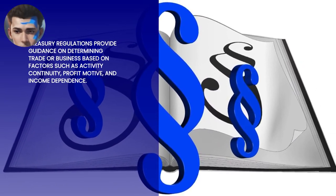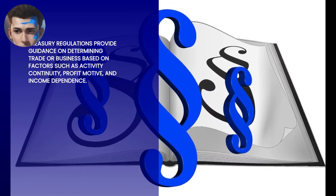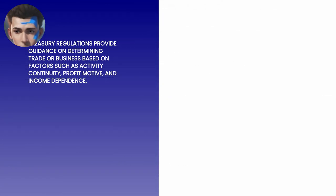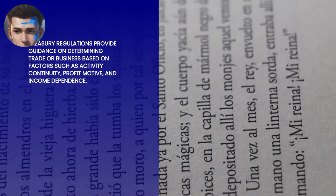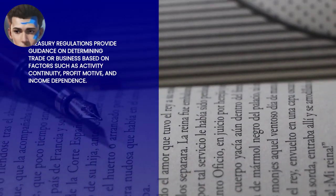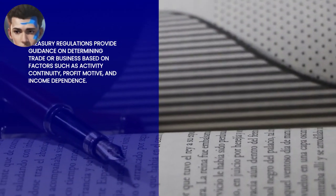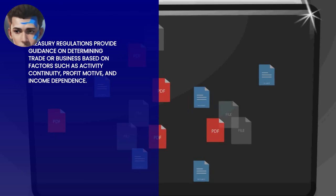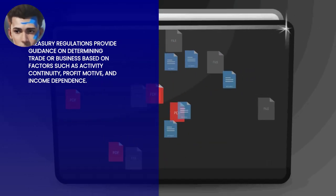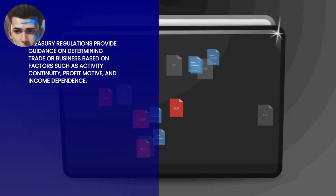Treasury Regulations: the Treasury Department issues regulations that interpret and clarify the code. These regulations often provide additional details on what constitutes a trade or business, considering factors like continuity and regularity of activity, profit motive, intent to engage in the activity for income, and dependence on the activity for livelihood.